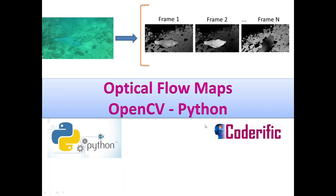Hello and welcome to Coderific. In this video we are going to see how we can create optical flow maps for each frame in a video, and to do that we are going to use the OpenCV library in Python. Optical flow is the pattern of apparent motion of image objects between two consecutive frames, and the motion of image objects is caused by the movement of the object or camera.